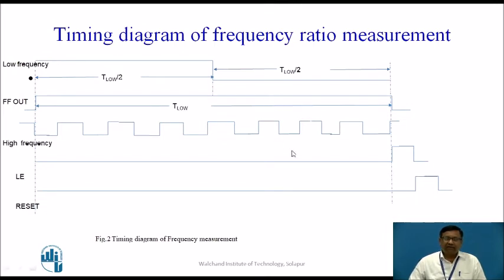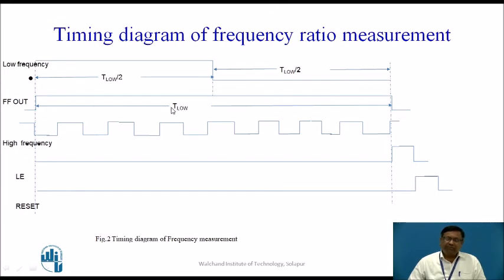Let us understand the operation of the frequency ratio measurement setup using the timing diagram. The first waveform shown is the low frequency signal; one time period is indicated. For the first half cycle it is high and then low. This is given to the flip-flop, and the flip-flop output gives a high pulse for exactly one full time period of the low frequency signal. The counter counts the high frequency pulses for exactly this period — that is, how many high frequency clock pulses occur in one time period of the low frequency signal — which gives the frequency ratio.